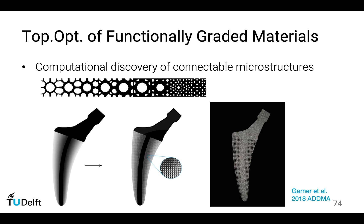One of the applications of topology optimization is the design of personalized implants. This is a collaboration with the biomechanical engineering department. We have implants which are solid in the middle and very sparse on the boundary, and this sparse structure is important to stimulate bone in-growth. But in between the porous boundary and the solid interior, there is a requirement to create a gradation of microstructures. In this project, we use topology optimization to compute microstructures such that they are not only optimized for mechanical performance, but also they are connectable — if you place them together, they connect very well.